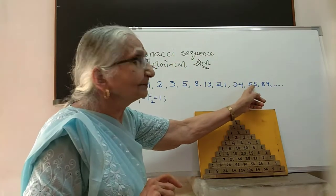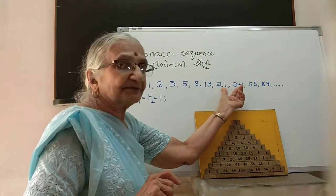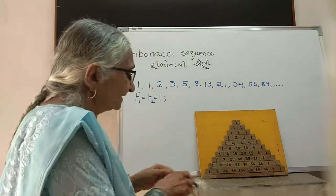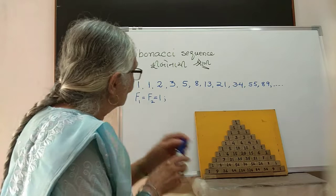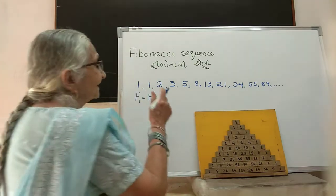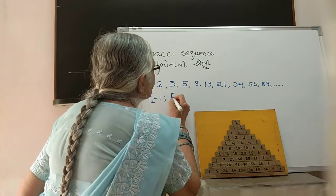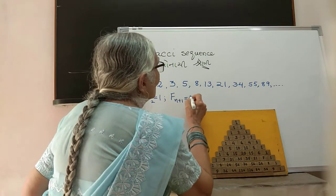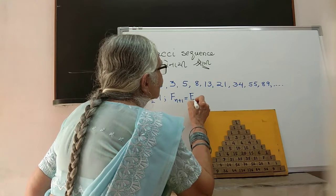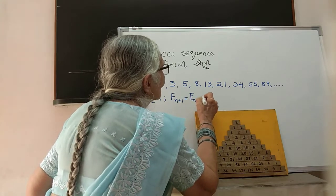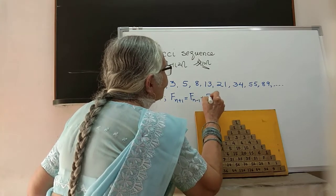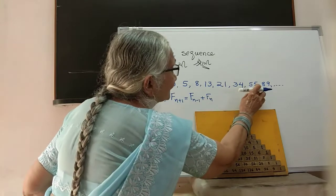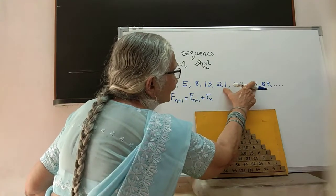To get any number here you have to add the two previous ones. We put it like this: if we want the n+1 term, we take the two previous ones—F_n-1 and F_n—and add them to get the next one.